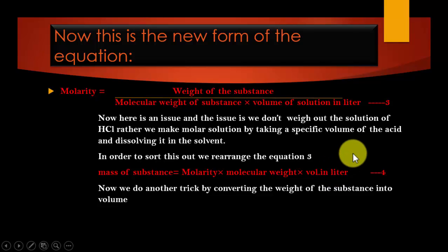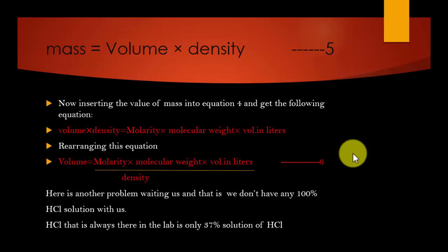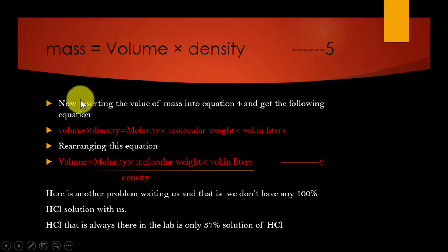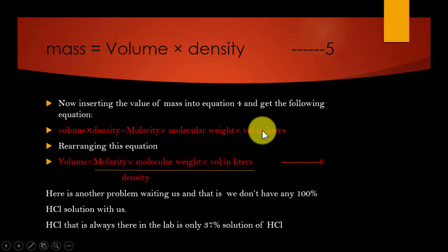After rearrangement, equation number three looks like this: mass of substance equals molarity times molecular weight times volume in liters. We also know that mass equals volume times density (equation number five). Substituting this in, our equation becomes: volume times density equals molarity times molecular weight times volume in liters.